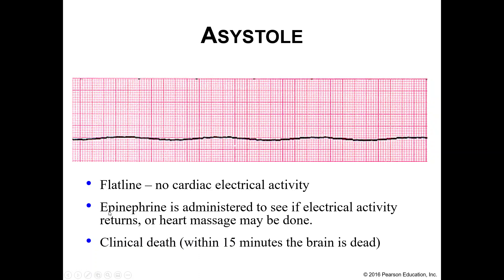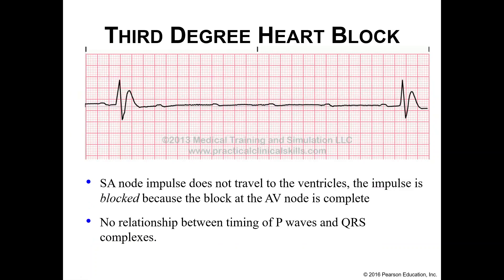Third-degree heart block occurs when impulses from your SA node are not reaching the ventricles because the AV node has been blocked. There's no longer a good relationship between the timing of your P wave and your QRS wave. The P wave represents atrial depolarization and the QRS wave should be ventricular depolarization, but that signal isn't getting through. There is a huge gap, and the P waves are not making sense.